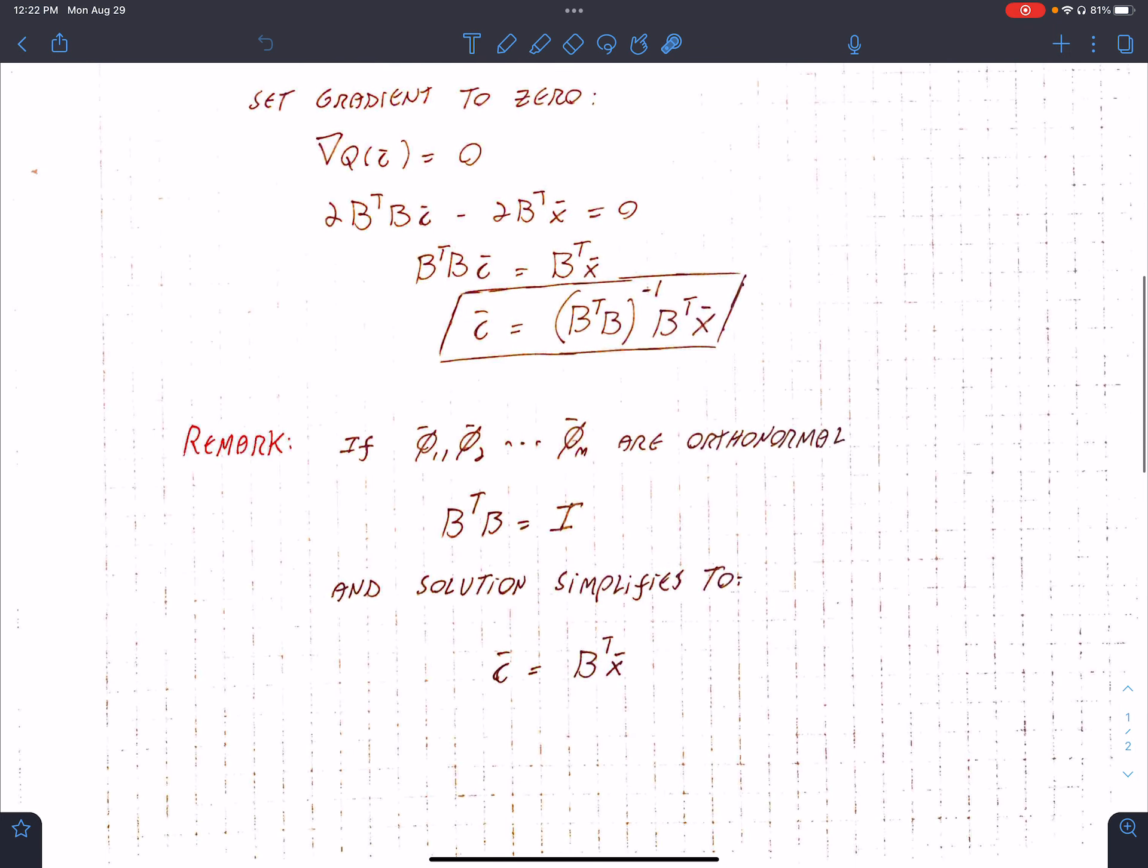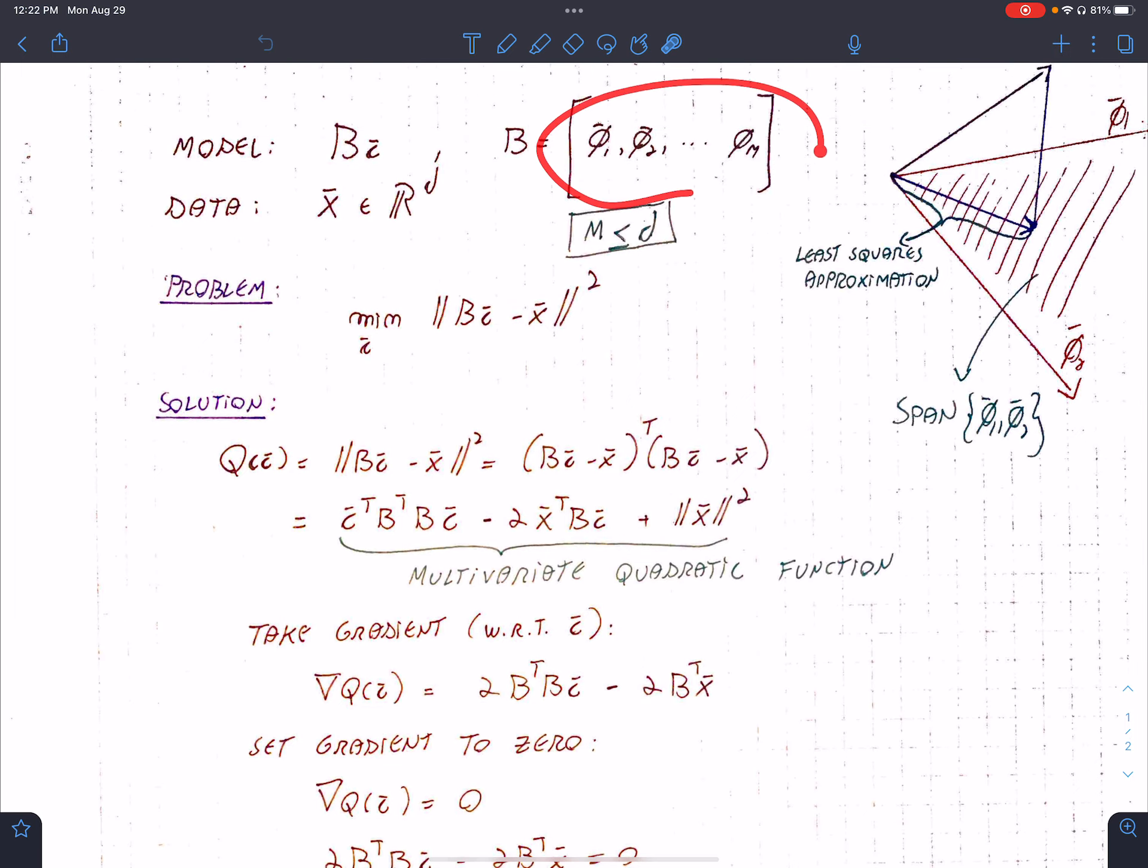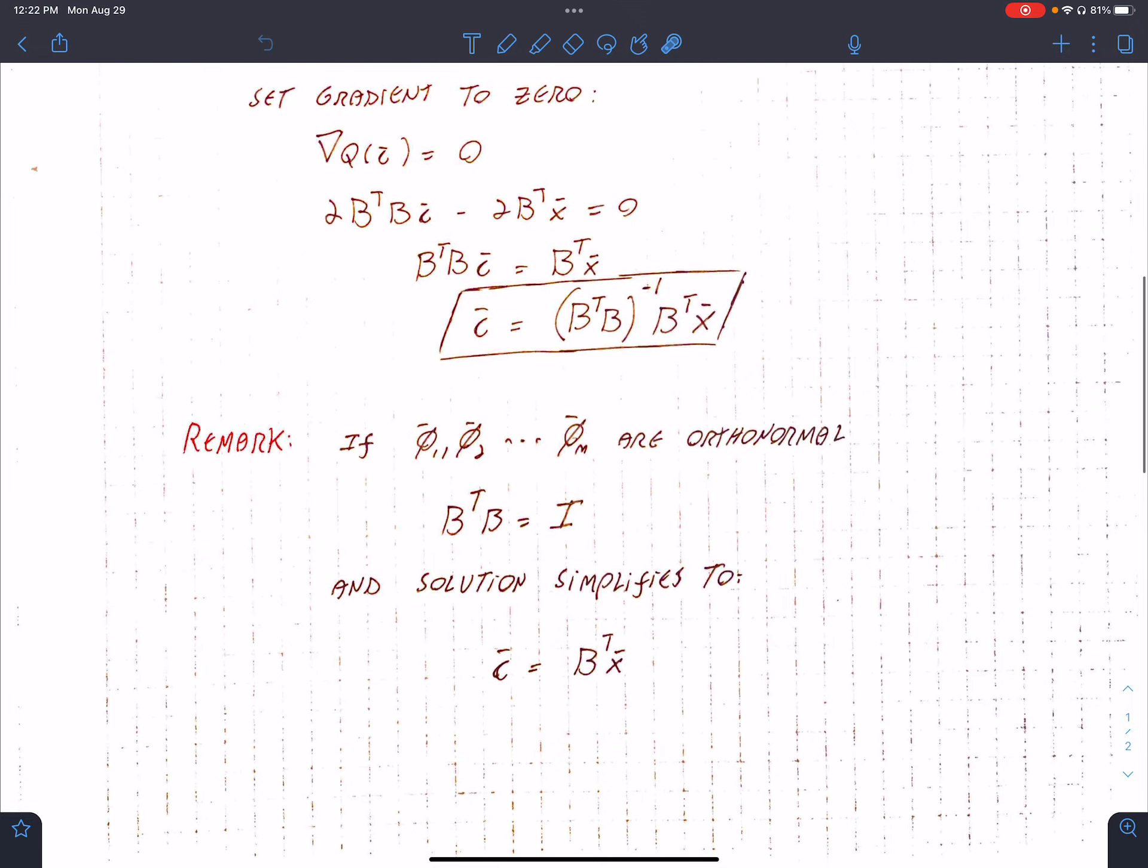So a simplification remark is that if our set of vectors that we are using to make up B, as we explained here on top, B is our set of vectors stacked in this particular column format. If the set of vectors are orthogonal, then B transpose B is the identity matrix. And so if B transpose B is the identity matrix, the inverse of the identity matrix is itself, and the solution is given simply by B transpose x.